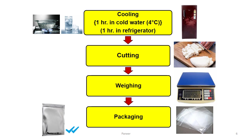In the case of home preparation, paneer is made on a small scale up to 5 to 10 liters. In industry, it is done in large tank-like vessels where the milk is heated, coagulation is performed, and the major part of whey is drained. After that it is collected through cloth.